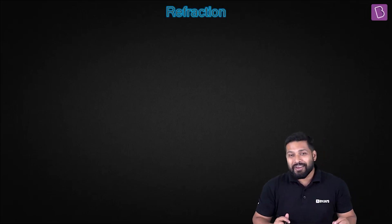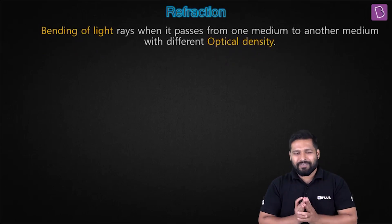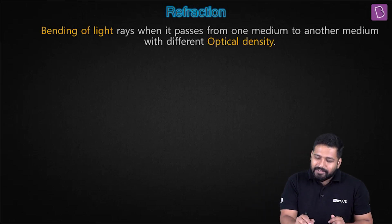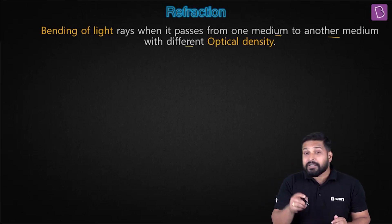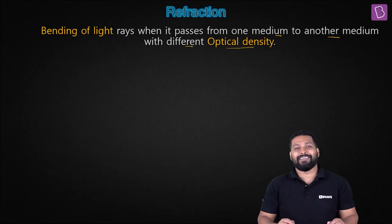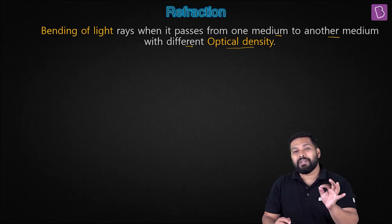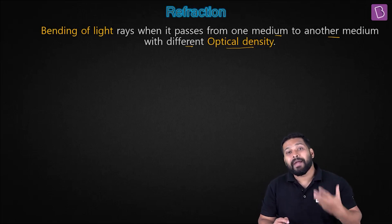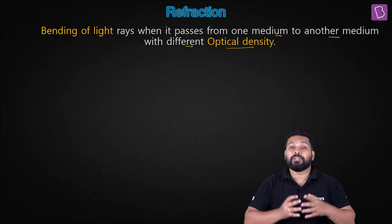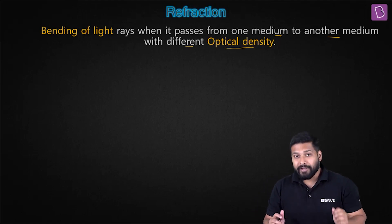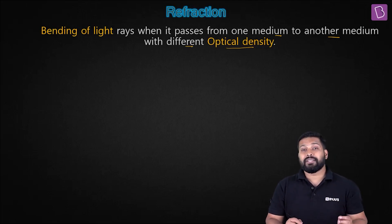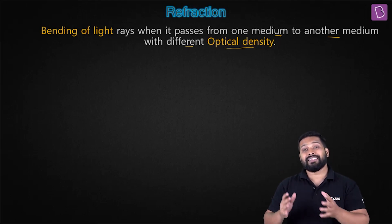Are you all excited to learn about refraction? Let's start off with the definition of refraction. You know it has to do something with the bending of light. The bending of light rays when it passes from one medium to another medium with different optical density — when a light ray passes through two mediums having different optical density, the light rays bend, and this entire phenomenon is what we call refraction. Just like we had seen certain terms in the case of reflection — incident ray, normal, reflected ray — we have similar terms here.